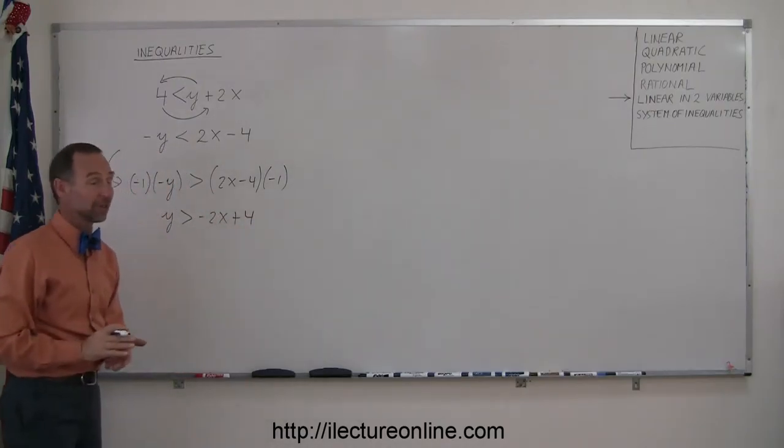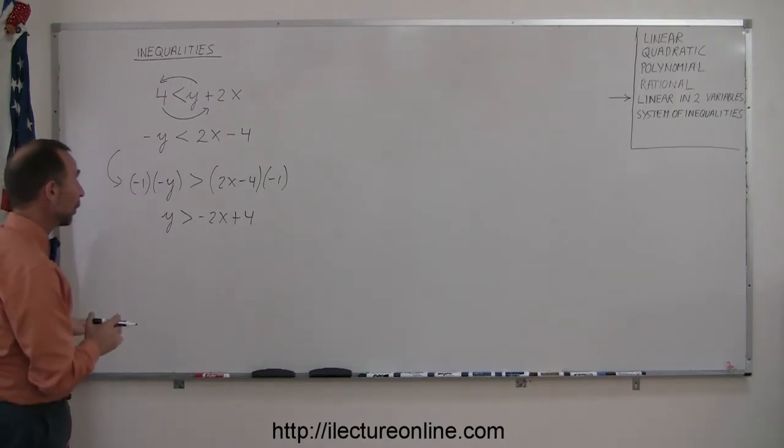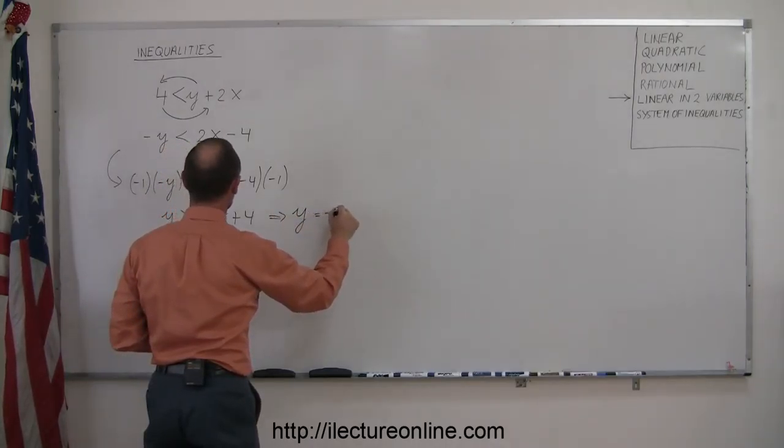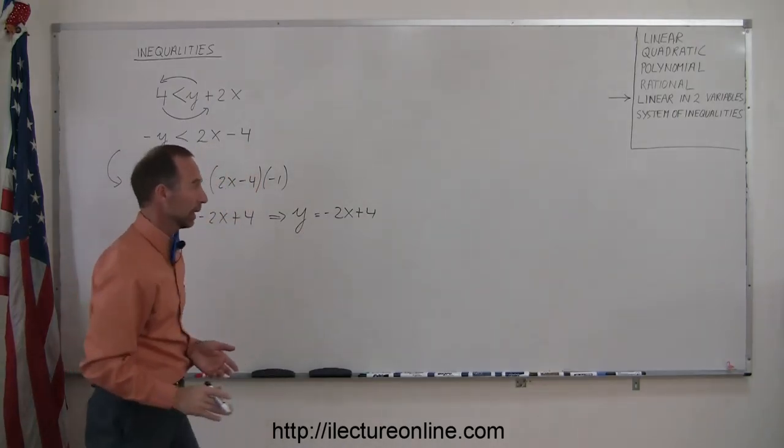Now we go ahead and we apply that. So we have a positive y is greater than a negative 2x plus 4. Now we're ready to solve this inequality. Again, to find the boundary of the inequality, we want to write its equivalent equation. We write y is equal to minus 2x plus 4, and plot this on an xy plane.